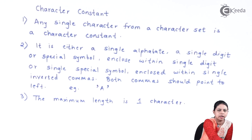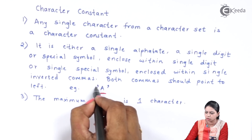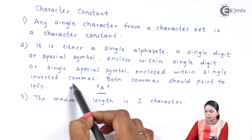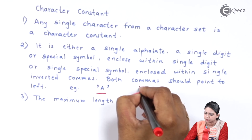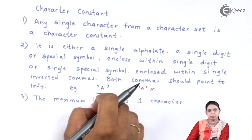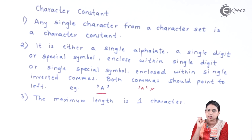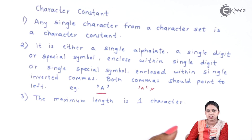For example, 'a' can be called a character constant because 'a' is a single character enclosed in single inverted commas. Both commas should point to the left — you cannot write the character constant with the commas pointing otherwise, as that would not be a valid character constant. Anything enclosed inside single quotes is considered a character constant. The maximum length of a character constant is one character.